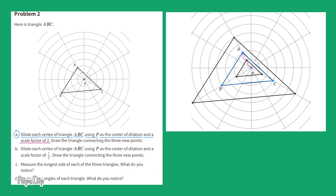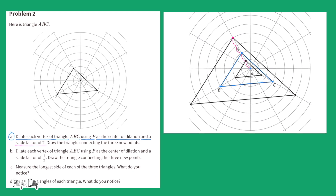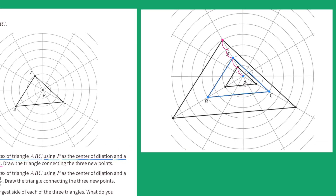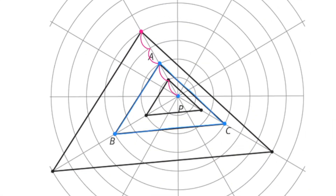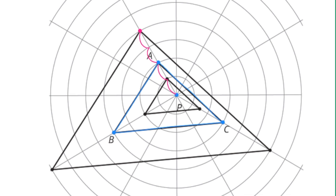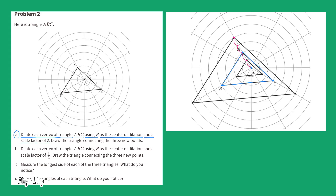Follow the line or ray that runs from center point P straight through A and count four units — that will be the new location of point A after the dilation with a scale factor of two.